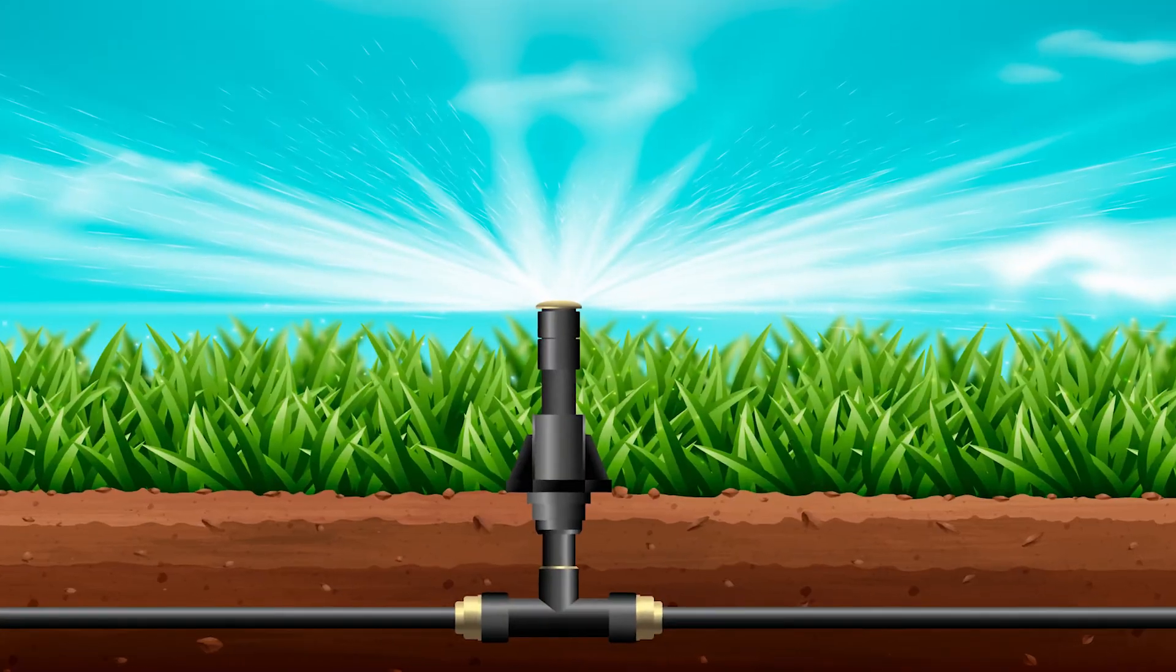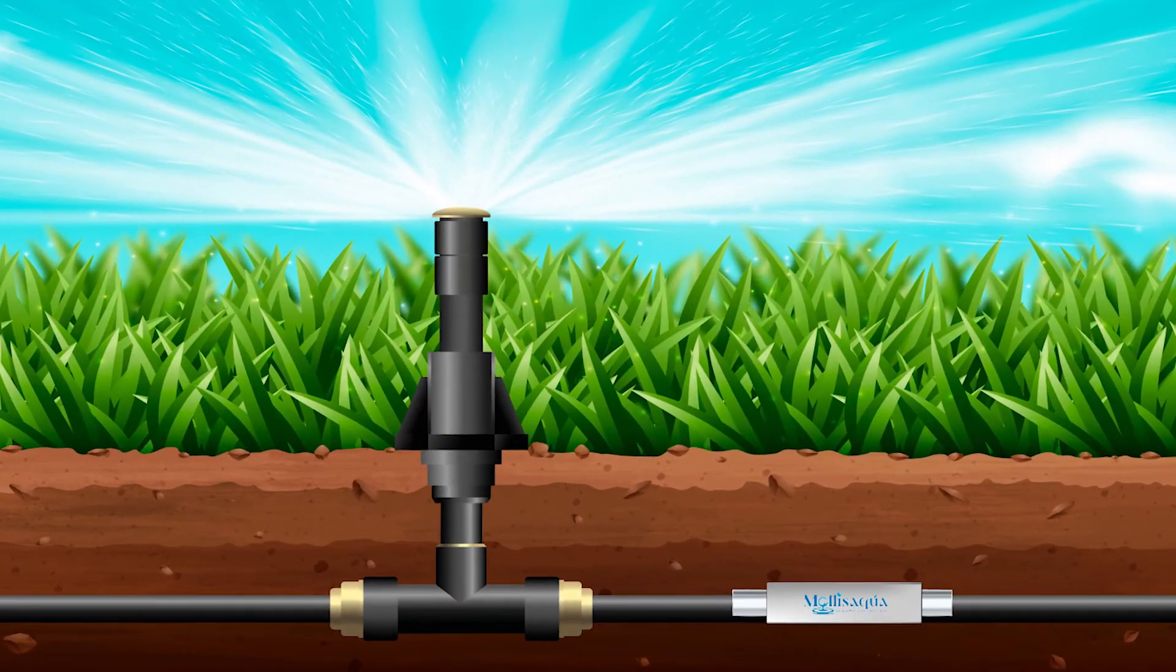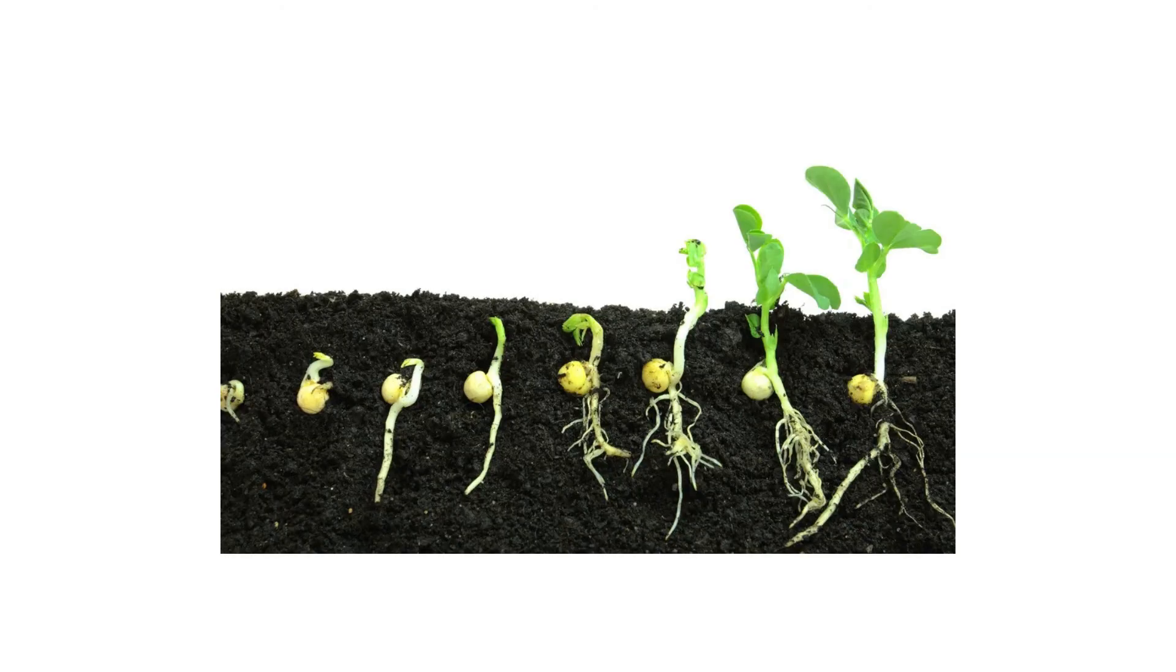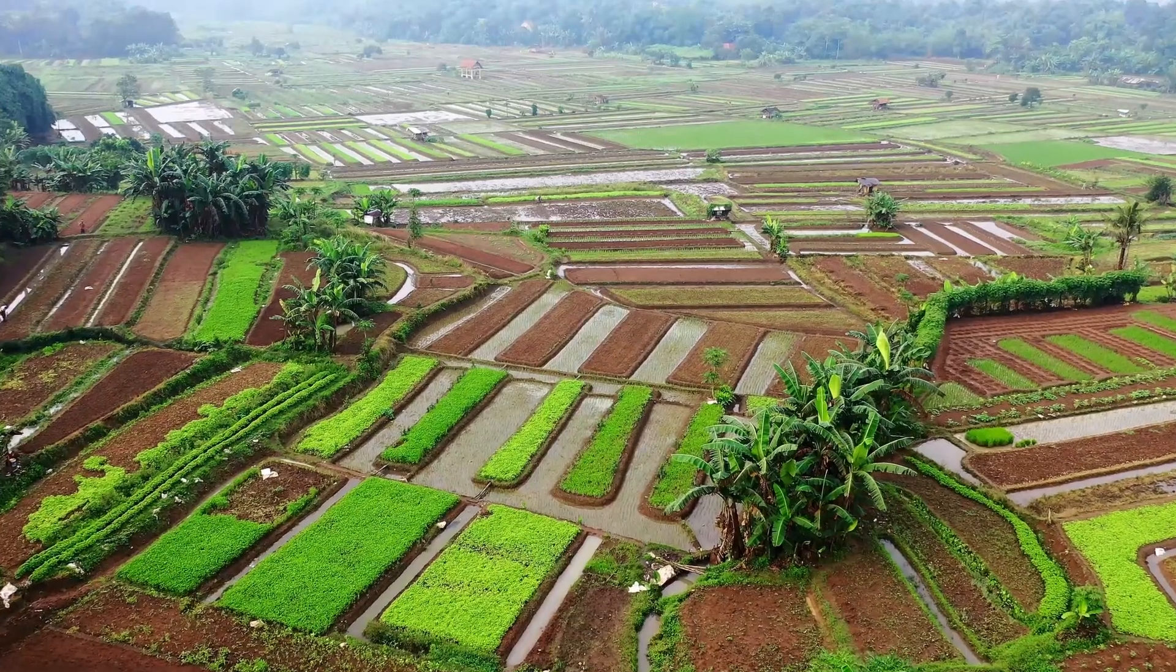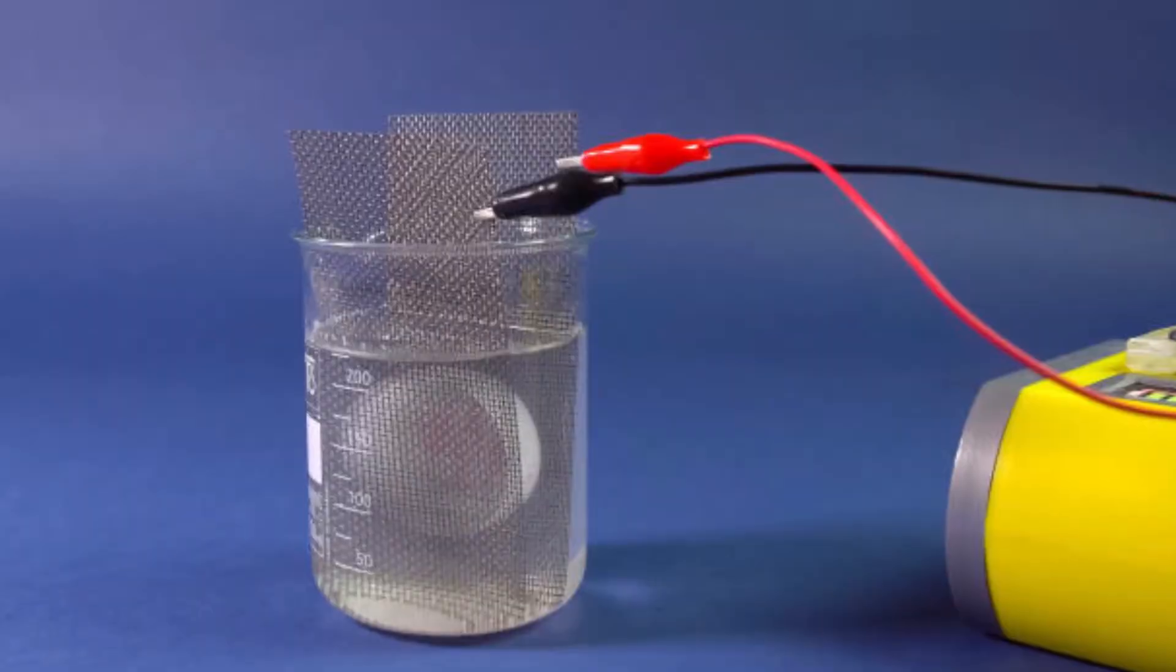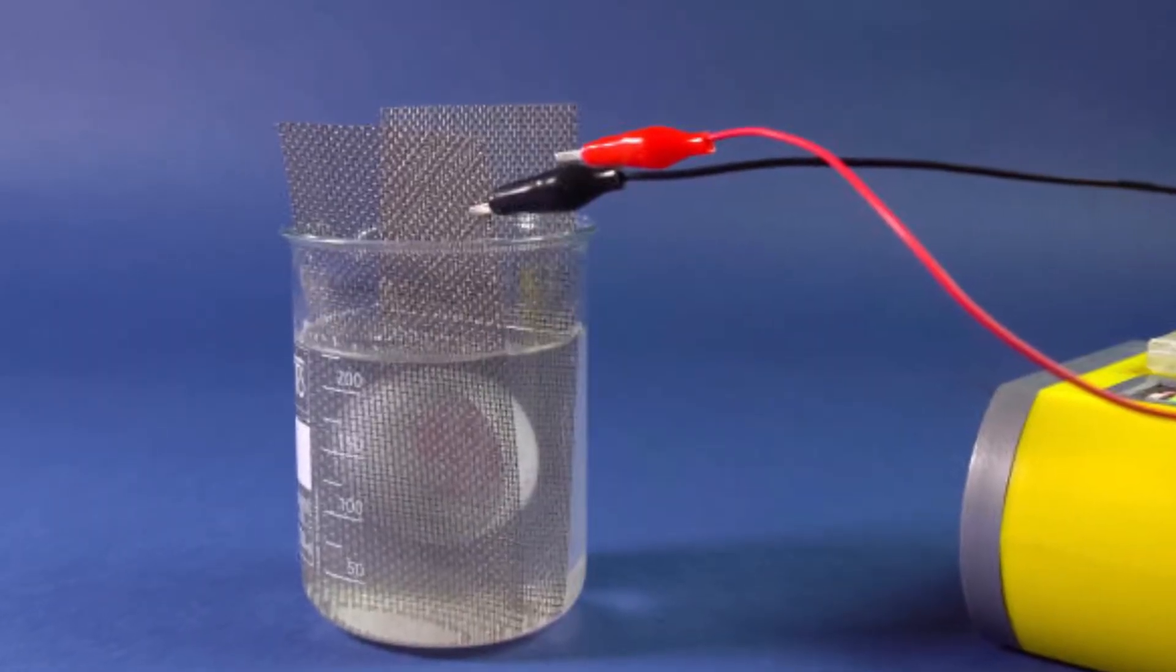In agriculture, it is installed in the water delivery lines, addressing issues like poor germination, stunted plant growth, and leaf burn, while also improving crop yield and reducing water consumption. It reduces electrical conductivity and softens the soil.